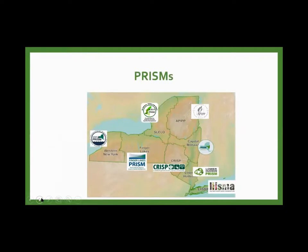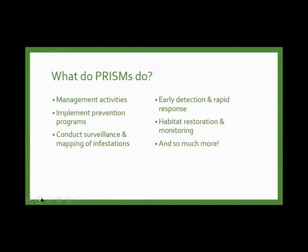Here are your local PRISMs: the Long Island PRISM, Lower Hudson PRISM, Capital Mohawk PRISM, APIP and Adirondacks, Lake Champlain, St. Lawrence, Eastern Lake Ontario, Catskill PRISM, Finger Lakes PRISM, and the Western New York PRISM. Every county in New York State is represented. PRISMs conduct management, prevention, surveillance, mapping, early detection, rapid response, habitat restoration, and monitoring.